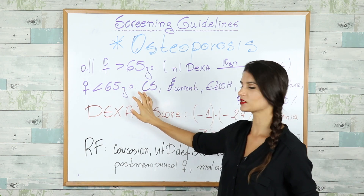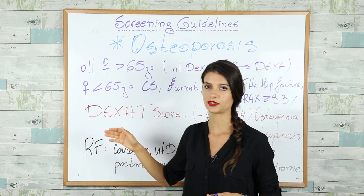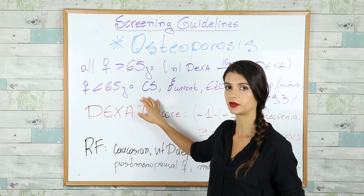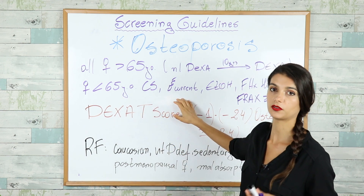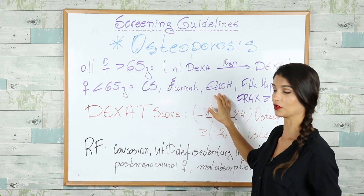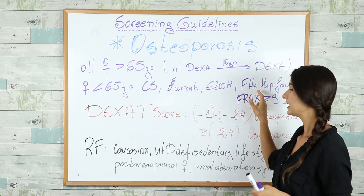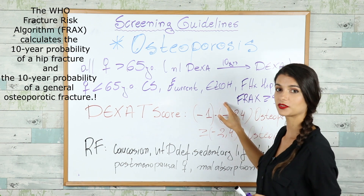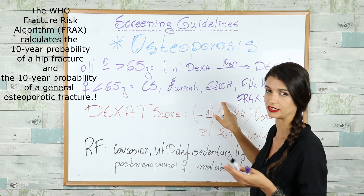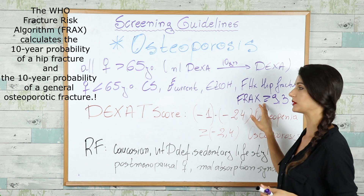There are some special situations where you start screening earlier than 65 years of age. Such patients include those who are on chronic corticosteroid therapy, who are currently smoking, who are currently abusing alcohol, who have a family history of hip fracture, and who have an overall FRAX score — which stands for Fracture Risk Assessment Tool — of more than or equal to 9.3%. Remember this number, you're going to get tested on this one.